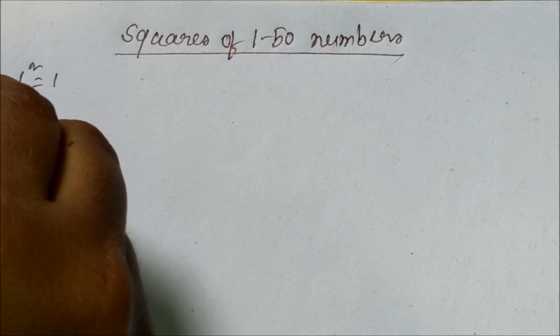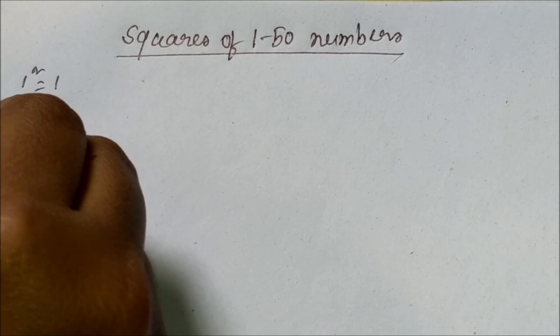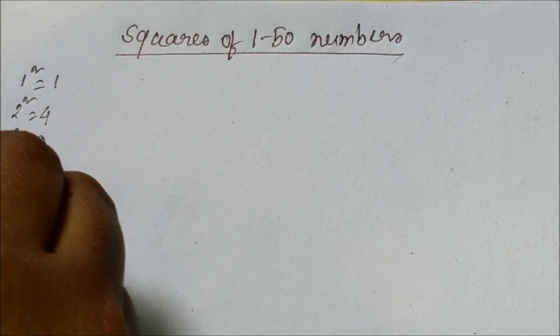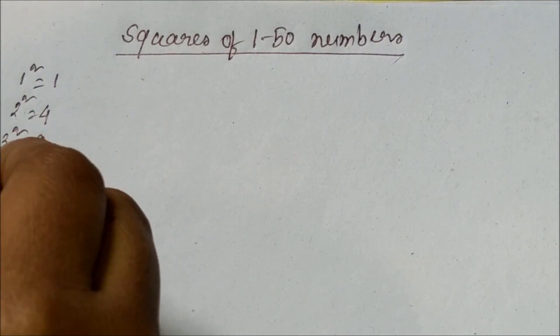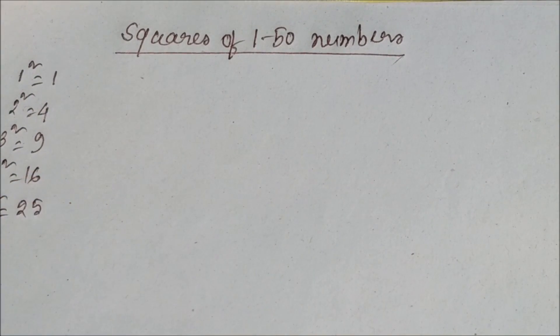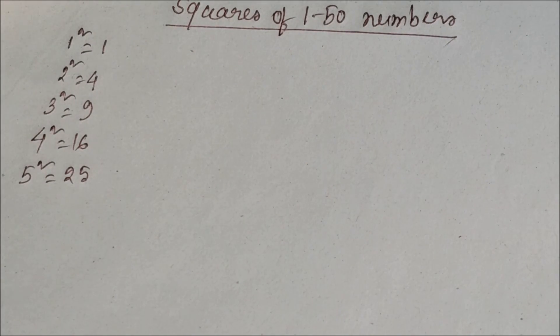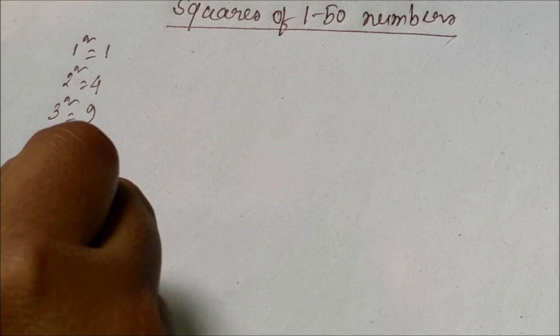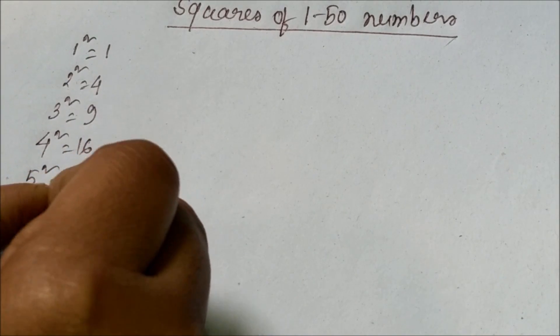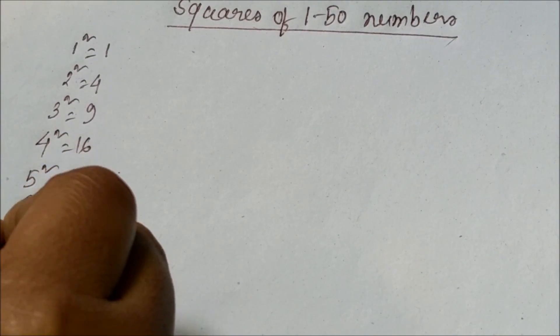2 square equals 4, 3 square equals 9, 4 square equals 16, 5 square equals 25, 6 square equals 36, 7 square equals 49.